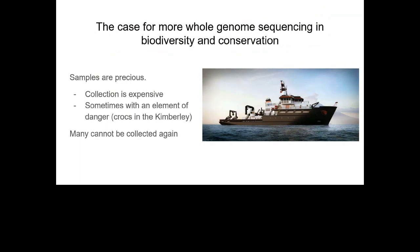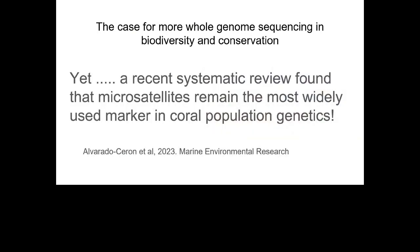Before I do that, I'd like to make a case for using whole genome sequencing more when we're doing population genetic studies. In biodiversity and conservation we tend to be budget-constrained, but it's important to remember that we spend a lot of money sometimes on fieldwork collecting samples — sometimes people even brave crocs and sharks to collect them. Those samples might also form a really irreplaceable historical record. A recent systematic review found that microsatellites remain the most widely used marker in coral population genetics. I don't want to be a microsatellite basher, but I do want to encourage people to use the latest methods and explain why they're beneficial.